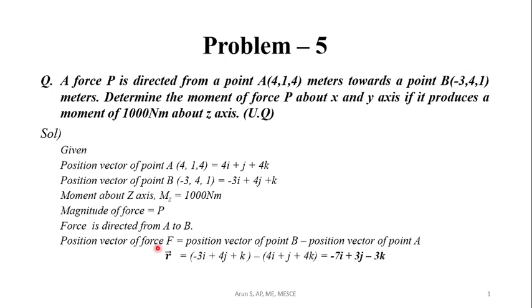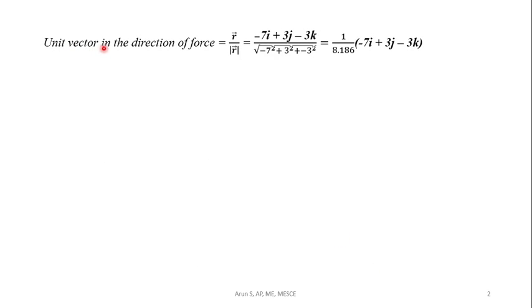We will find the unit vector in the direction of force. The force is along the R vector, so the unit vector equals R divided by the modulus of R. R vector is (-7i + 3j - 3k) divided by the square root of ((-7)² + 3² + (-3)²), giving us (1/8.186) × (-7i + 3j - 3k).